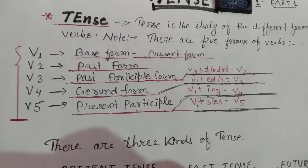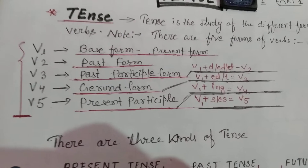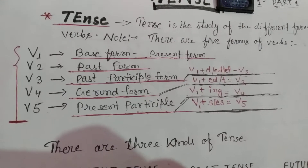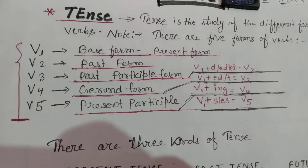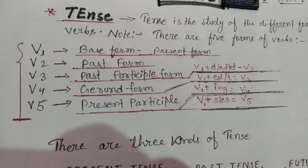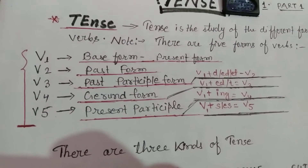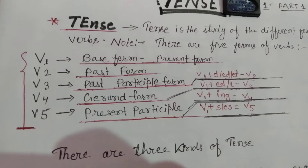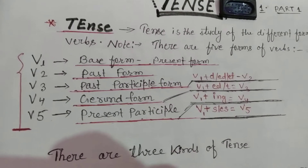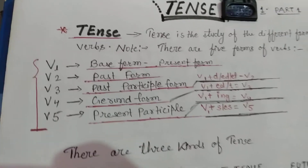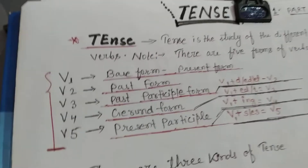In the same way, when we add ED or T to V1, it turns into V3, which is the past participle form of the verb. V1 plus ING equals V4 — when we add ING to V1, it turns into V4, which is called the gerund form. And when we add S or ES to V1, it becomes V5.